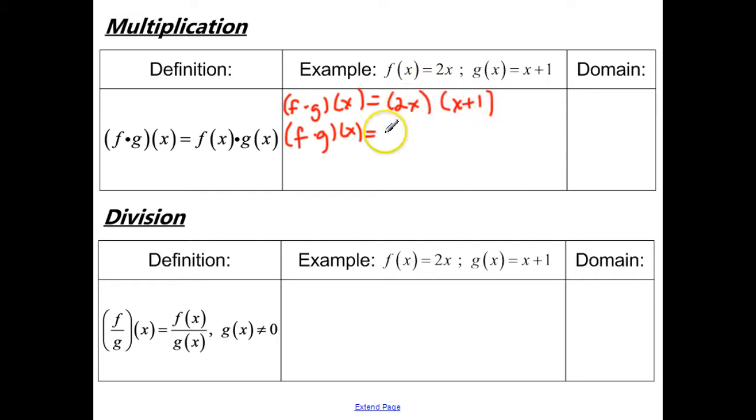So 2x times x, this is going to be 2x squared. And then 2x times positive 1 will be 2x. So again, this is already in simplest form, so this is going to be our final combined function. And the domain is still what is common from both. So we have negative infinity to positive infinity.